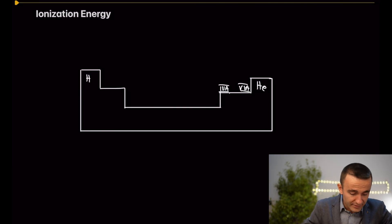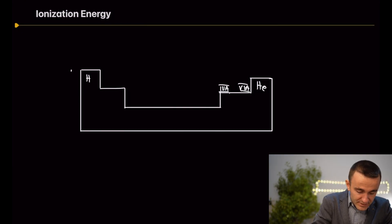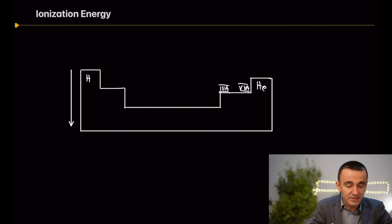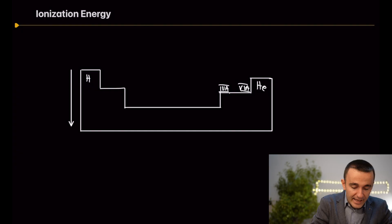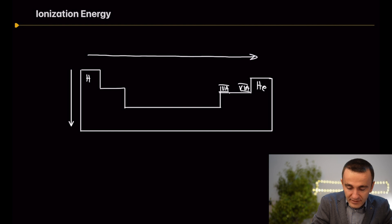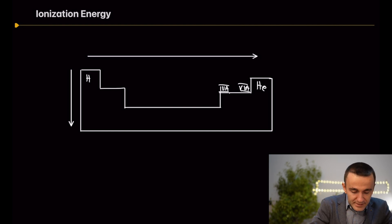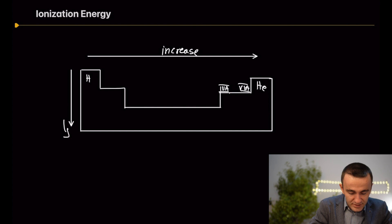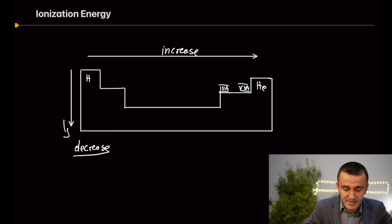As for the trends: ionization energy decreases as we move down a group — this is because you are increasing the atomic radius and the electrons are farther away from the nucleus, making them easier to remove. As we move from left to right across a period, ionization energy increases. There are two exceptions to this trend: Group 3A and Group 6A.